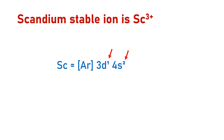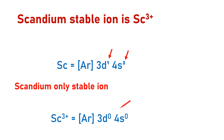The only stable ion that scandium can form is a scandium-3 ion, in which both electrons in the 4S and the only electron in the 3D are lost. Because the only stable scandium ion has an empty D subshell, scandium is not considered to be a true transition element.